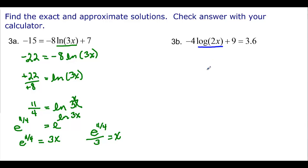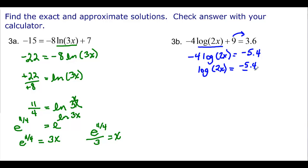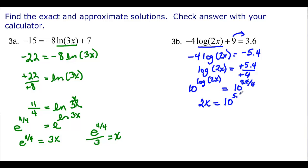For the last problem, we want to isolate log 2x. Moving 9 to the other side and dividing by negative 4, log of 2x equals 5.4 over 4 as a positive number. Now we exponentiate with base 10: 10 to the log base 10 of 2x equals 10 to the 5.4 over 4. Using the property that b to the log base b of x equals x, we get 2x equals 10 to the 5.4 over 4. Dividing by 2, x equals 10 to the 5.4 over 4 all over 2.